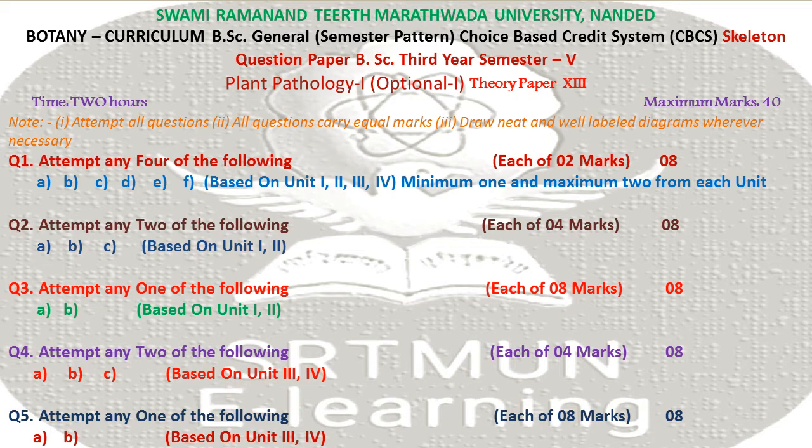Question 1: Attempt any 4 of the following. Based on Unit 1, 2, 3, and 4 — minimum 1 and maximum 2 from each unit. Each of 2 marks, equal to 8 marks total.